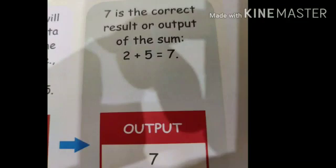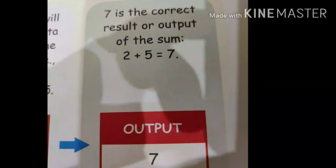And the final output that you get, 7 is the correct result or output of the sum. That is, 2 plus 5 is equal to 7. So this is the output.